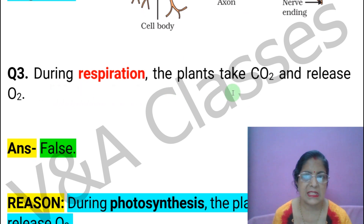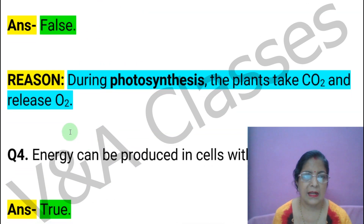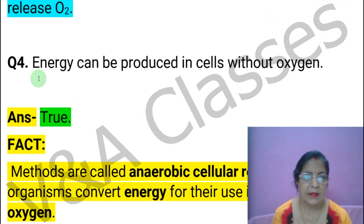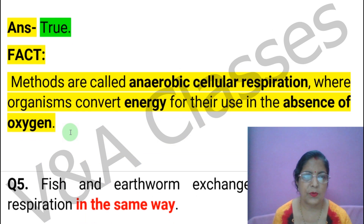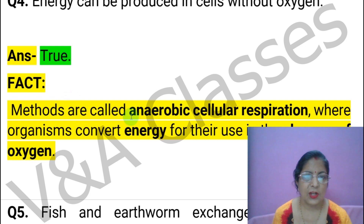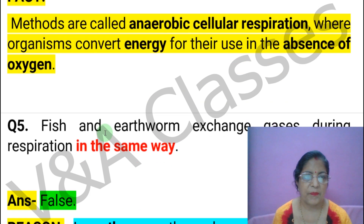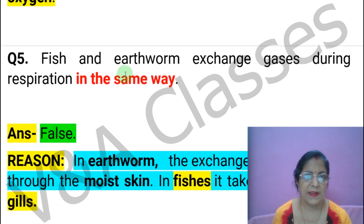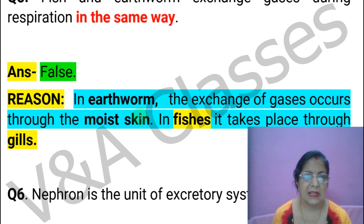Next statement: During respiration, plants take in CO2 and release O2. This statement is FALSE. Next statement: Energy can be produced in cells without oxygen. This statement is TRUE — this is the fact of anaerobic respiration. Next statement: Fish and earthworms exchange gases during respiration in the same way. This statement is FALSE.